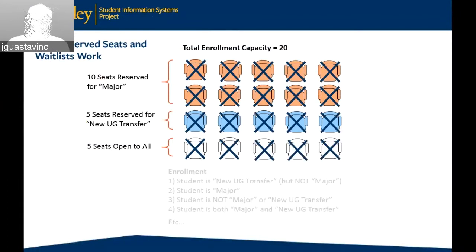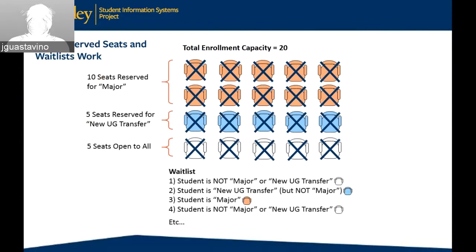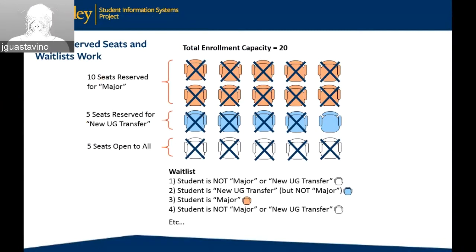Then we go to the wait list. A student drops, and that student is a new undergraduate transfer — the seat is reserved for that type of student. But if the first student on the waitlist is not a major or an undergraduate transfer, they do not get in. That's where you're going to get the question: 'I see that a seat is open, but I'm not getting promoted into that class.' The system will look at that student and say you don't meet the criteria for that reserved seat. It will go to the next in line — a new undergraduate transfer — who will take that seat and the class becomes full again.